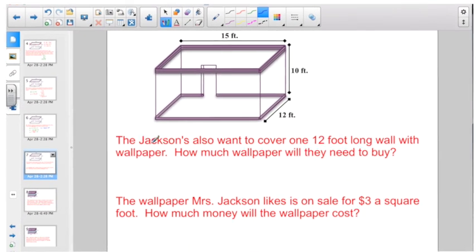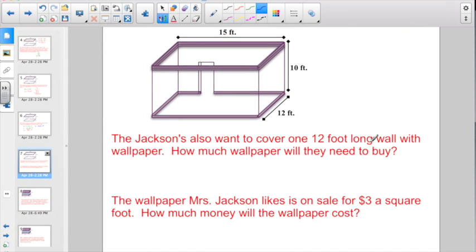Let's try another one. So the Jacksons also want to cover one 12-foot-long wall with wallpaper. How much wallpaper will they need to buy? So this one's a little bit trickier. They want to cover one 12-foot wall with wallpaper. Think about if you're putting wallpaper up right along here. Is this a perimeter problem, an area problem, or a volume problem? Hopefully, you know that's area. That is going to say area equals length times width. So 12 times 10 would be 120 square feet of wallpaper. I multiplied two numbers. I have to have an exponent of 2 in my label for square feet.